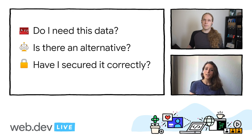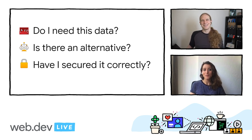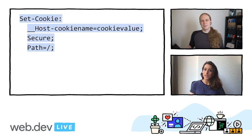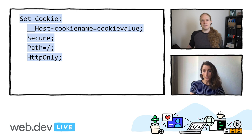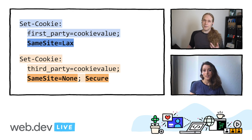So question three: have I secured it correctly? Let's do a summary. First-party cookies should try using the host prefix so they're secure and single origin. They should use HTTP only to stop JavaScript access. And they should set SameSite Lax to protect against cross-site request forgery. And if they do need to be third-party, then try and do the same, but with SameSite equals None and Secure.